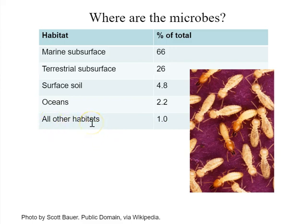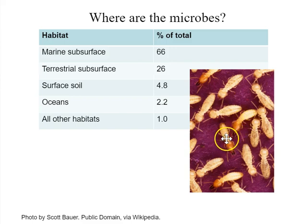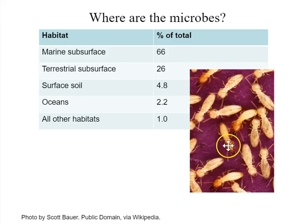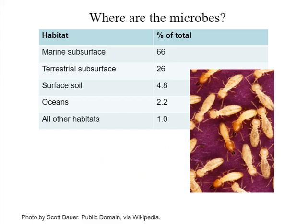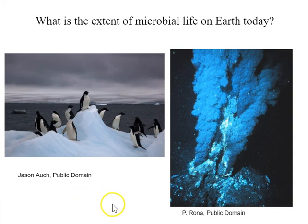About 1% of microbes are in all other habitats — that could be on and within us as human animals, or within the guts of termites. Termites contain a rich gut community that actually lets them digest cellulose and wood. When a termite colony infects wooded material like your house, the termites just mechanically chew and swallow the wood — it's the microbes in their guts that break down the cellulose and allow the termite to get energy from it. It's a symbiotic relationship between microbe and termite.